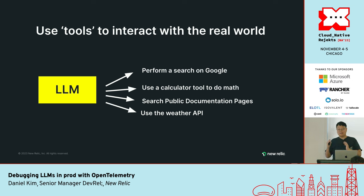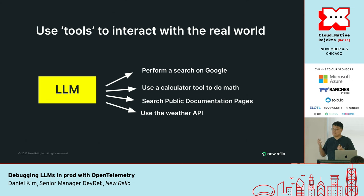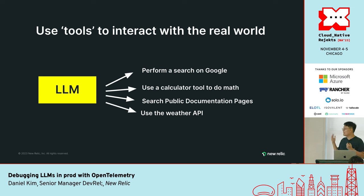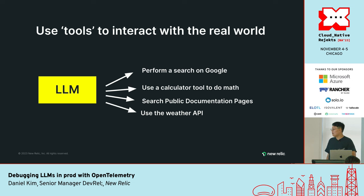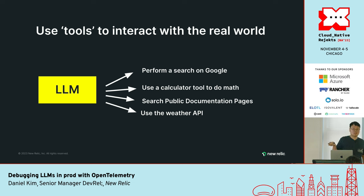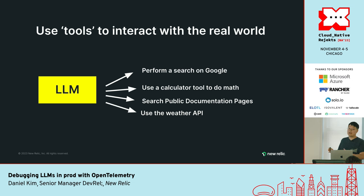You can also give LLMs the power to interact with the real world using tools. If an LLM doesn't know a piece of information — like who Ice Spice is — you can give it the ability to perform a search on Google. Or you can outsource the math portion of a query to a calculator. Or it can proactively search documentation pages if it doesn't know how to do something. Or if I ask it what should I wear today in Chicago, it can query a weather API. This gives it superpowers to answer queries it may not have the original context for.